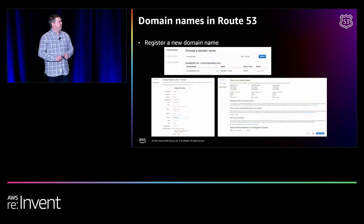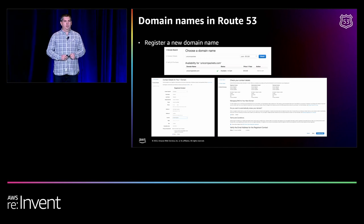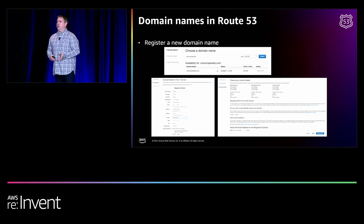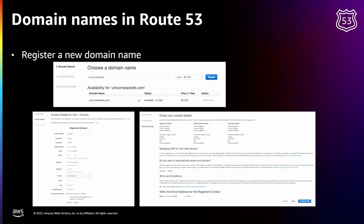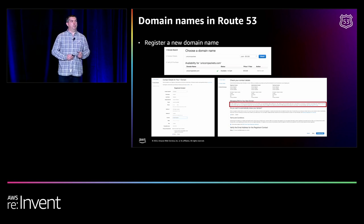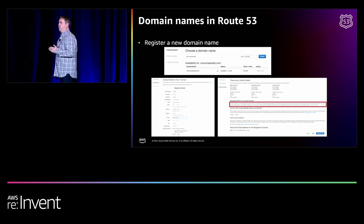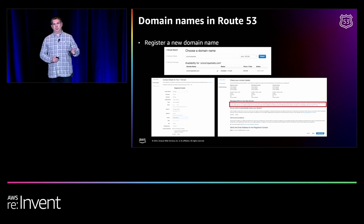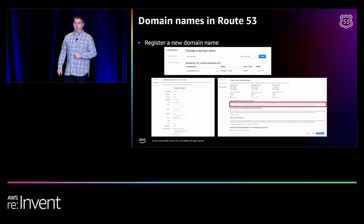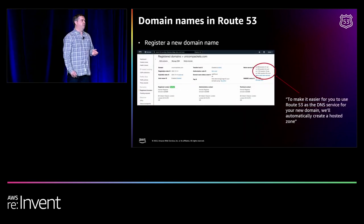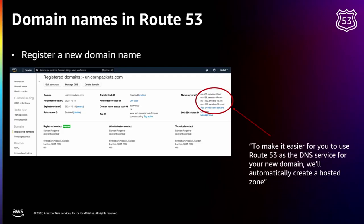When the domain name is registered in Route 53, you can then see the name servers it was delegated to. The process for transferring your domain name is very similar — just type the domain name in the search bar again and check it's available for transfer. We need to check the status of the domain name, as there are things that can prevent a transfer — like domain name locking or recent registration. Assuming everything passes those checks, it's then just a case of clicking next.